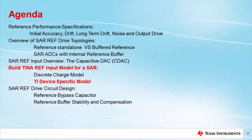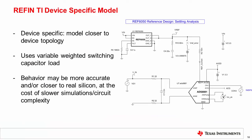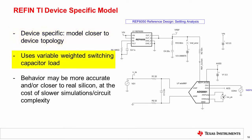Next, we examine a different type of SAR reference input model: the TI device-specific model. The TI device-specific model is provided directly by the factory. The model is built based on the specific topology of the device and uses a weighted switching capacitive load. The behavior may be closer to the real silicon. However, the macro model is more complex and will tend to take a longer time to converge and perform simulations.